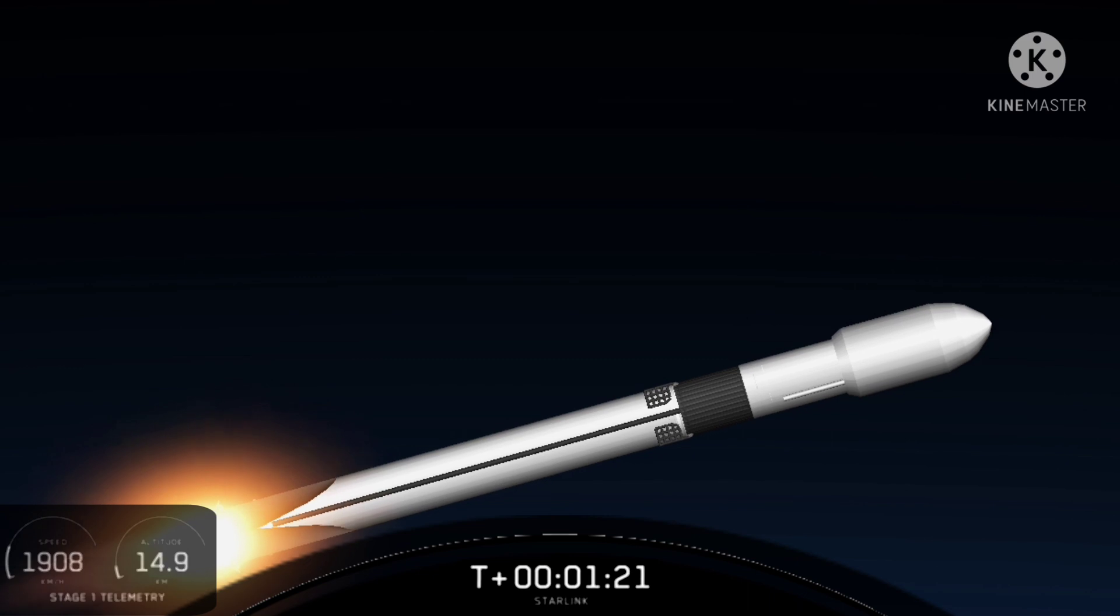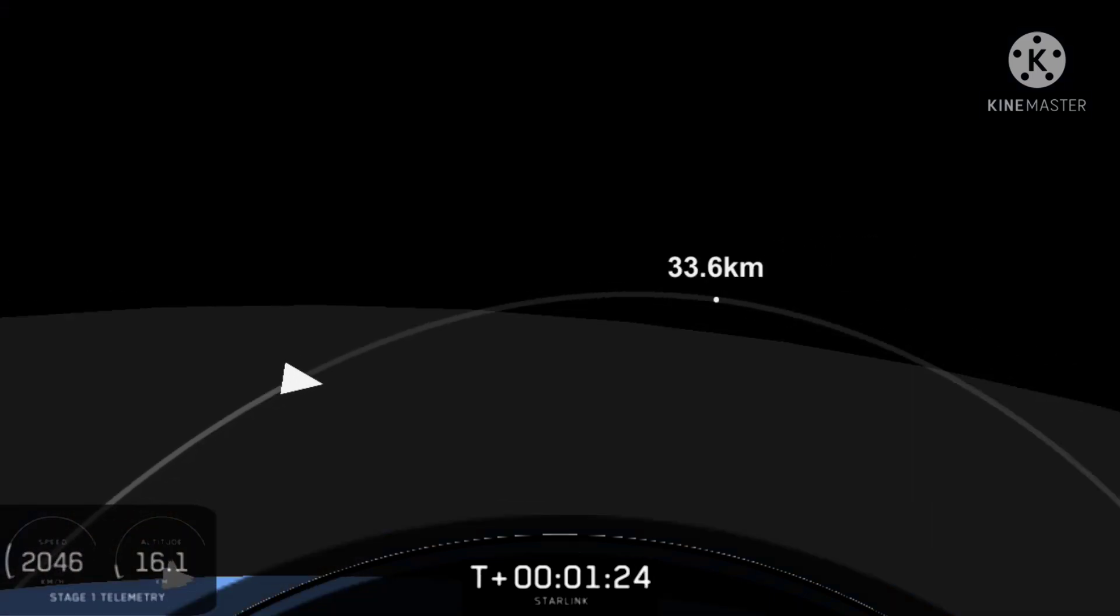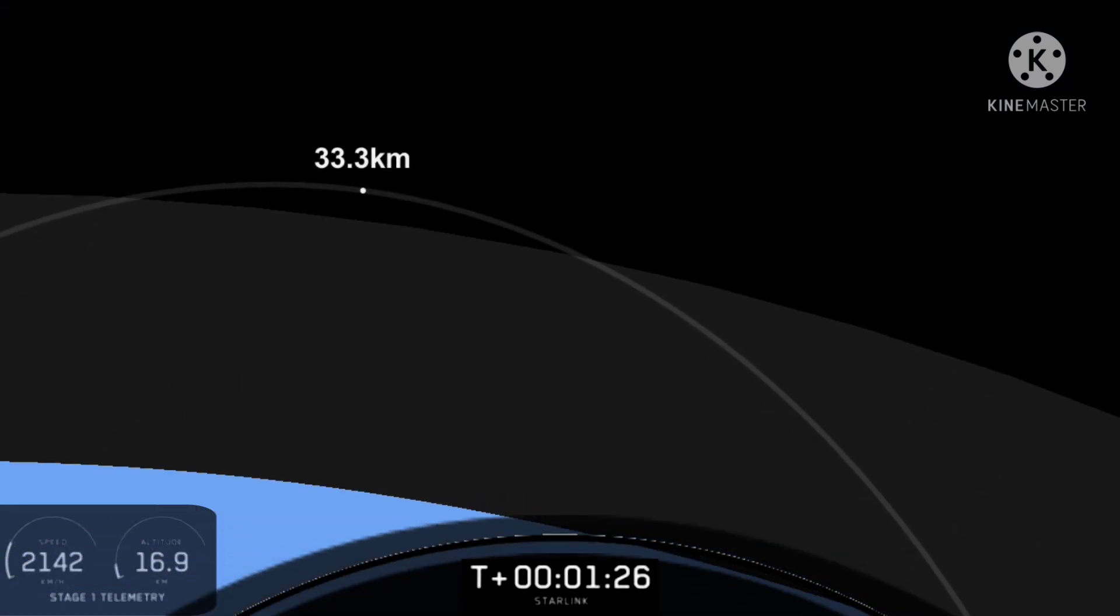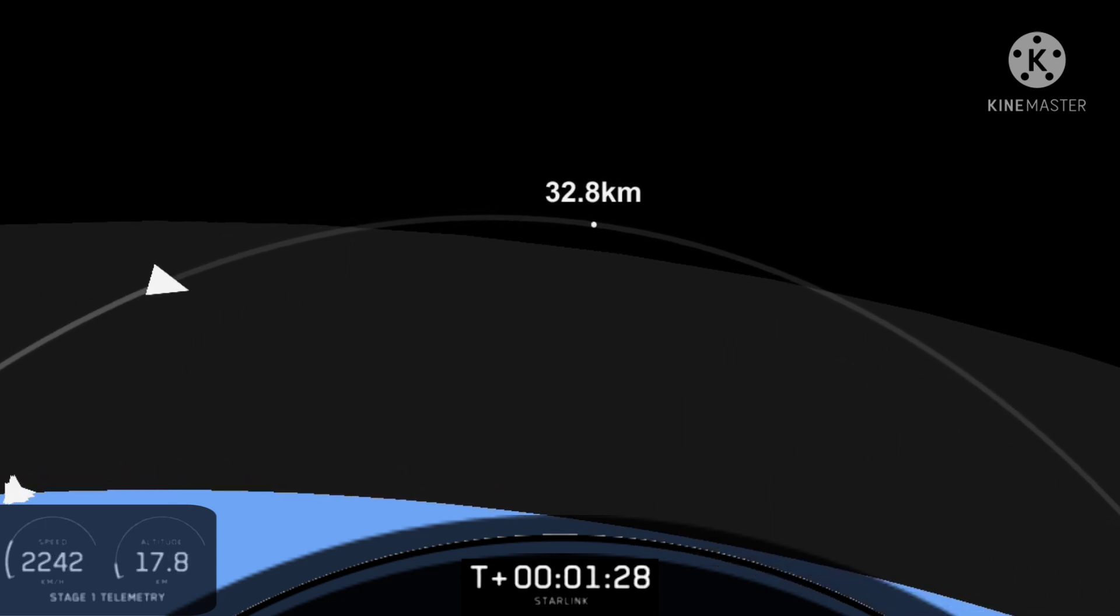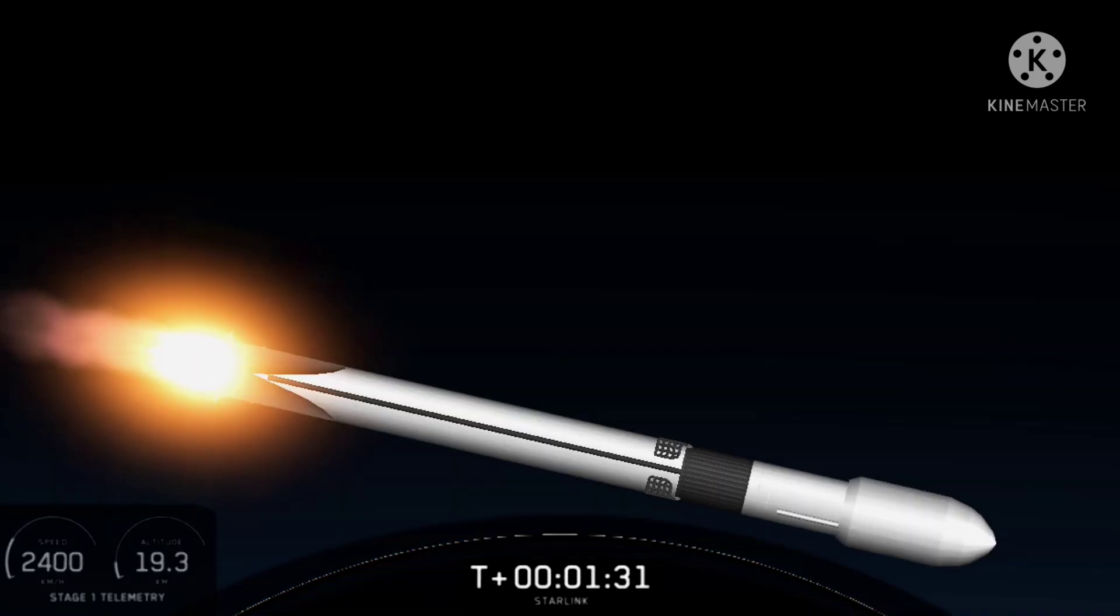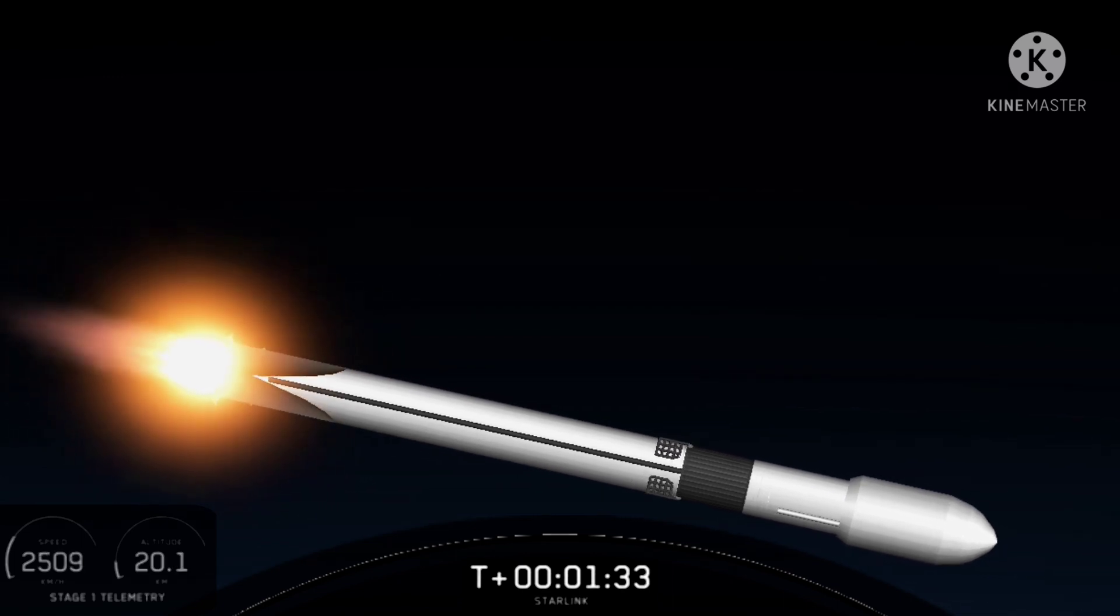We have a couple of events happening in quick succession. In about a minute, first up we'll have main engine cutoff, also known as MECO, followed by stage separation and then second engine start, also known as SES-1.